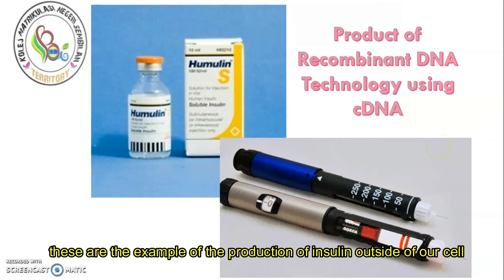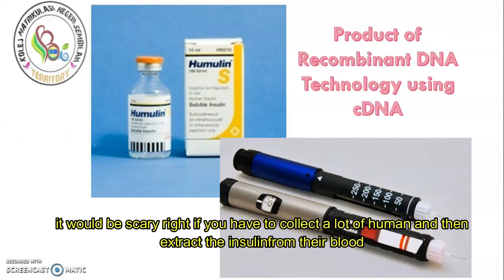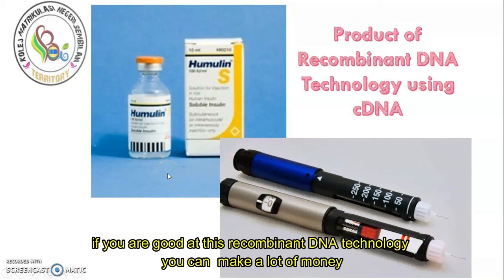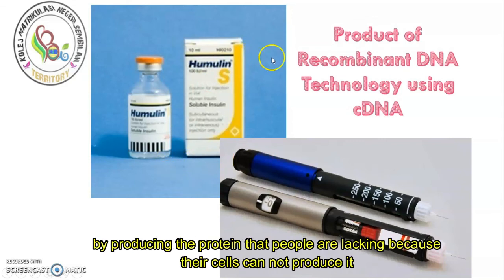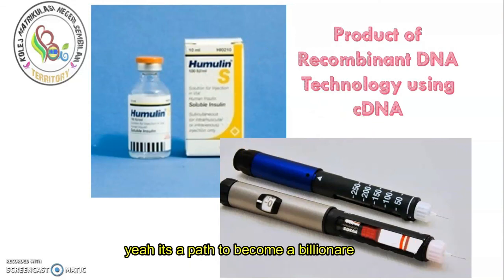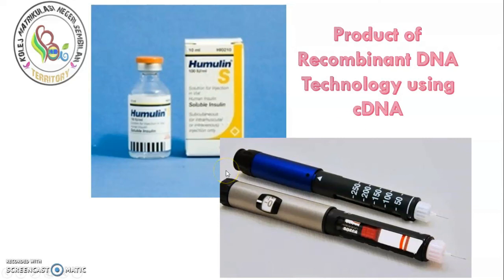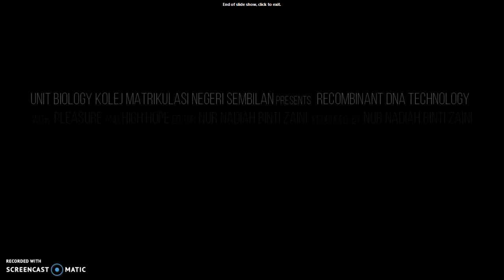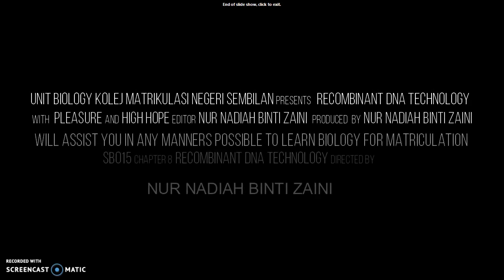These are examples of producing insulin outside of our cells. It would be frightening to collect large numbers of humans and extract insulin from their blood — but we don't have to do that, because we have recombinant DNA technology using cDNA. If you're good at this, you could make a lot of money by producing proteins that people are lacking because their cells cannot produce them — it's a path to becoming a billionaire! That's all for today. This is Madam Nadia — if you have anything to ask, come and see me. Thank you.